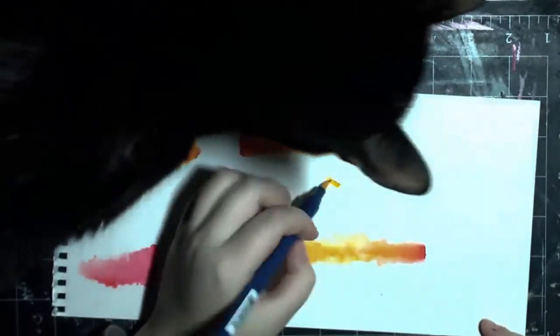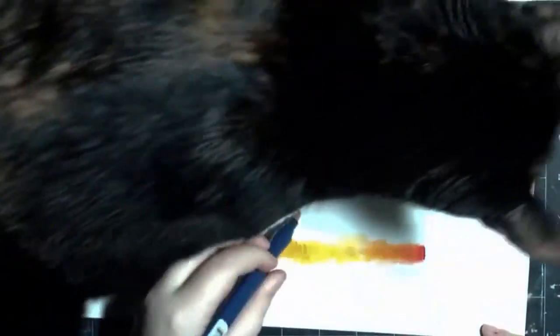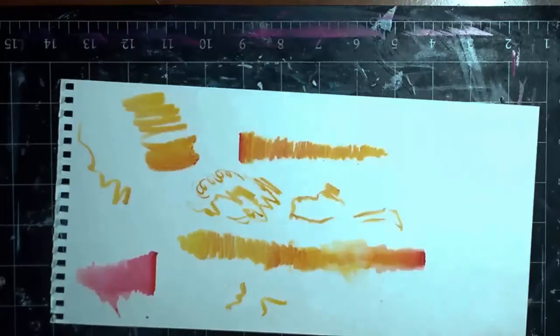And you've got a gradient from red to yellow just by using one marker that you touched with this one. And then to clean it off, you just kind of wipe your brush. Now we can get into the illustration.